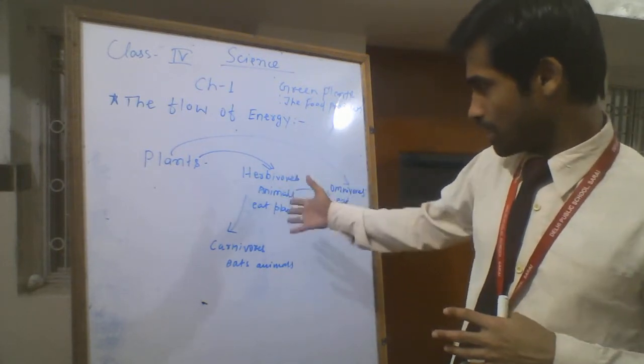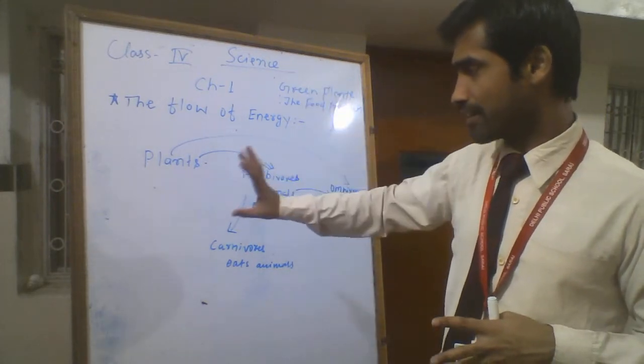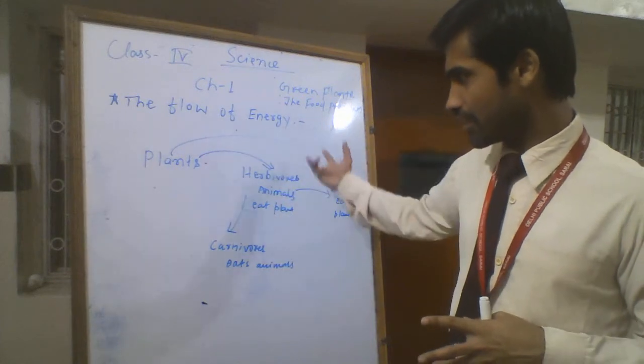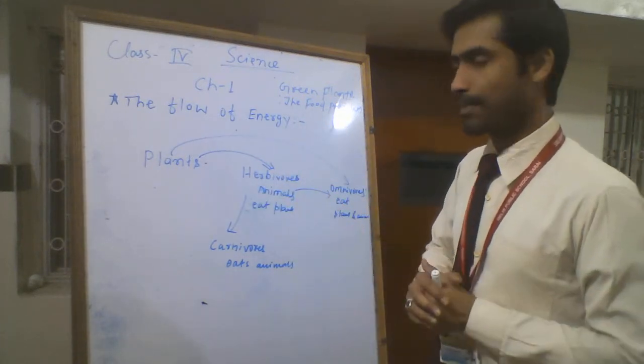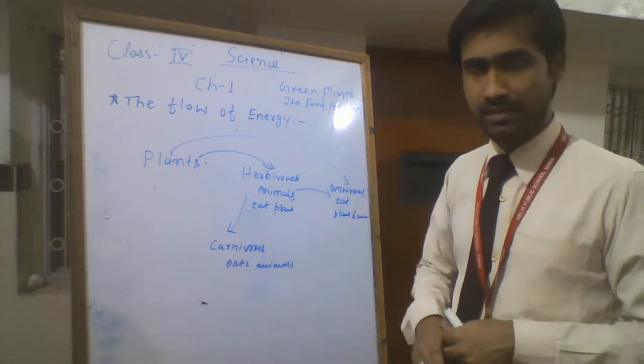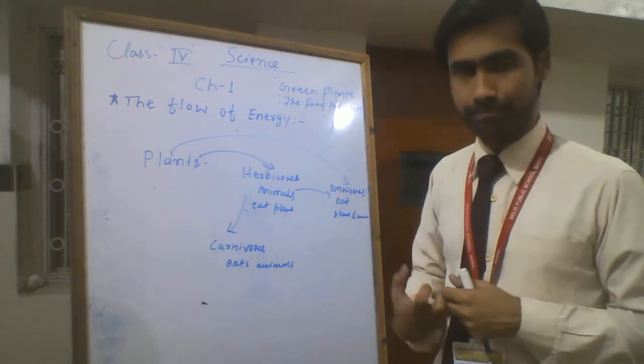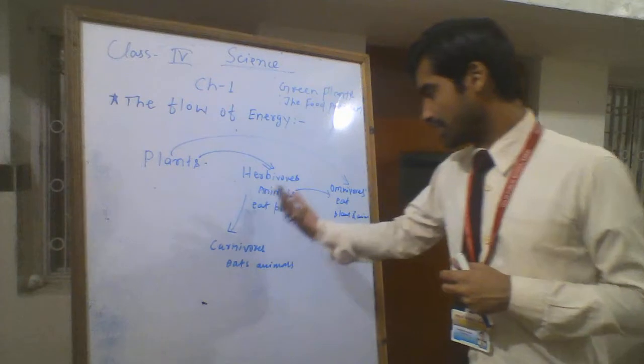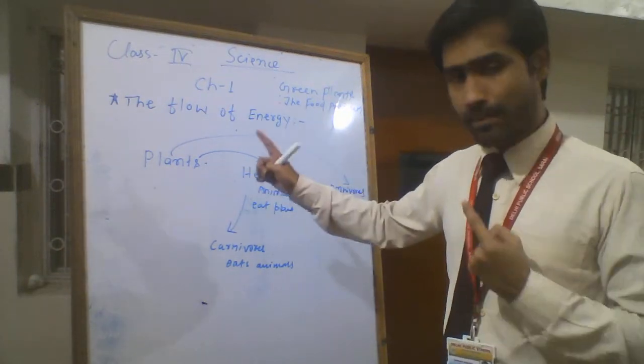Carnivores get energy through the herbivores animals. Omnivores animals directly eat plants and they get sunlight energy from plants. Omnivores also eat animals, so they get solar energy indirectly. This means that energy from sunlight flows through the food chain.